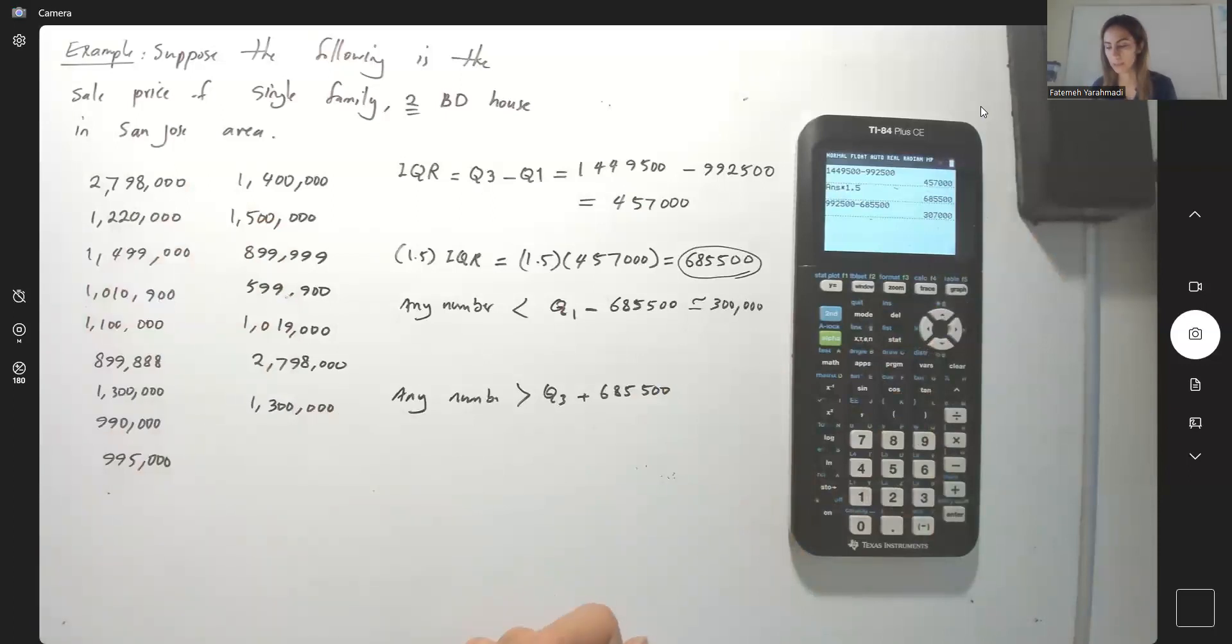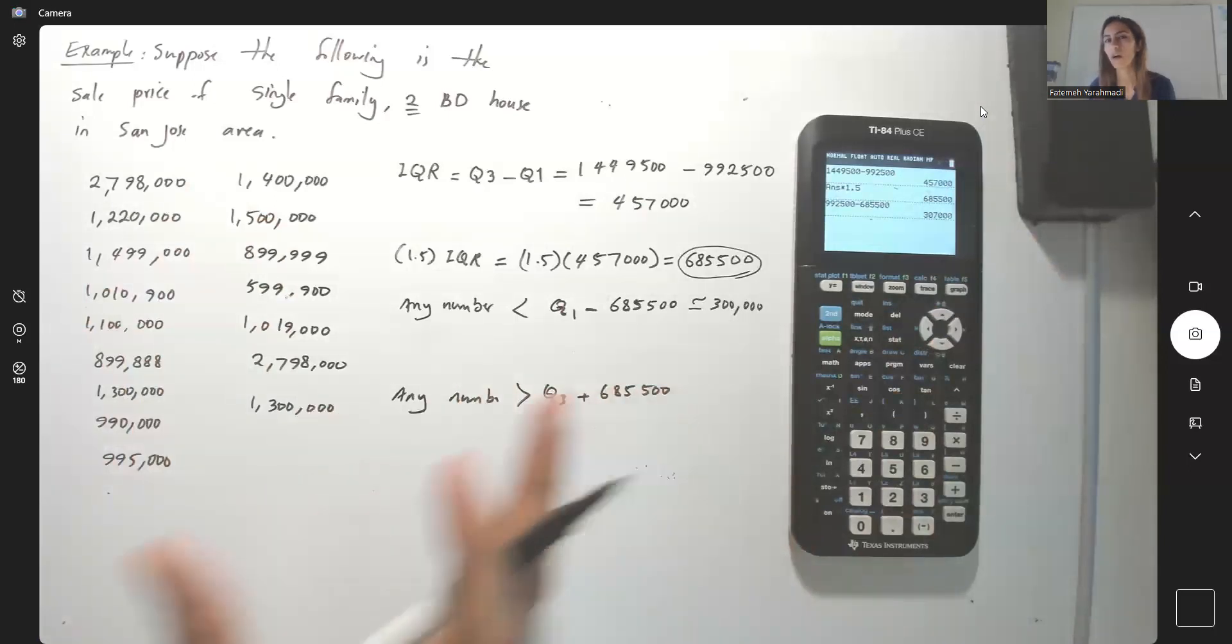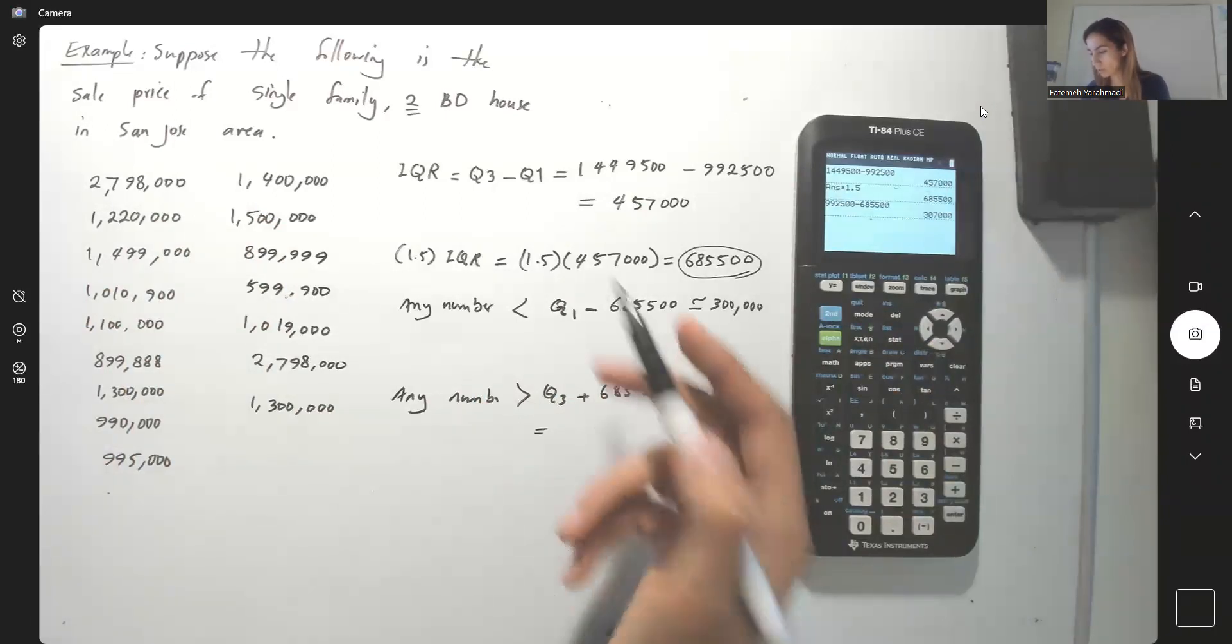So it means that the majority of the data that are distributed about the mean are fine. Now let's take a look at Q3 plus this number. Our Q3 was